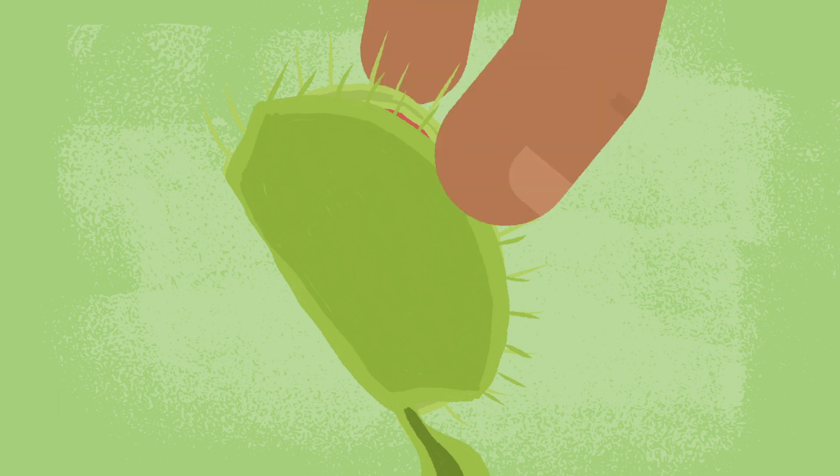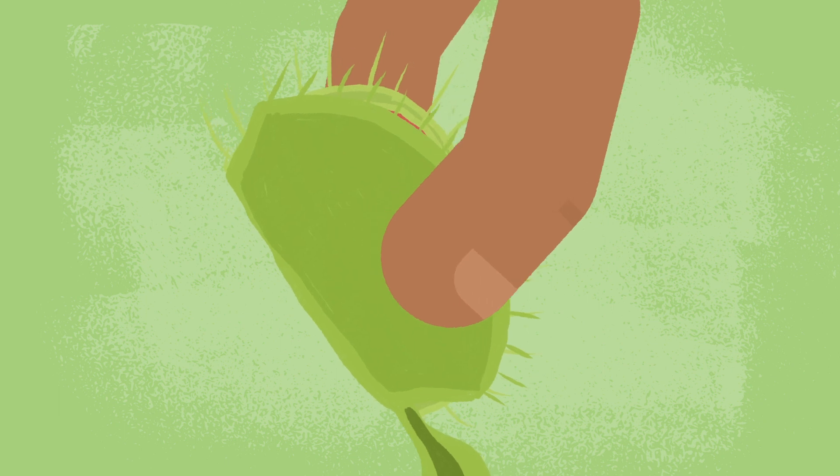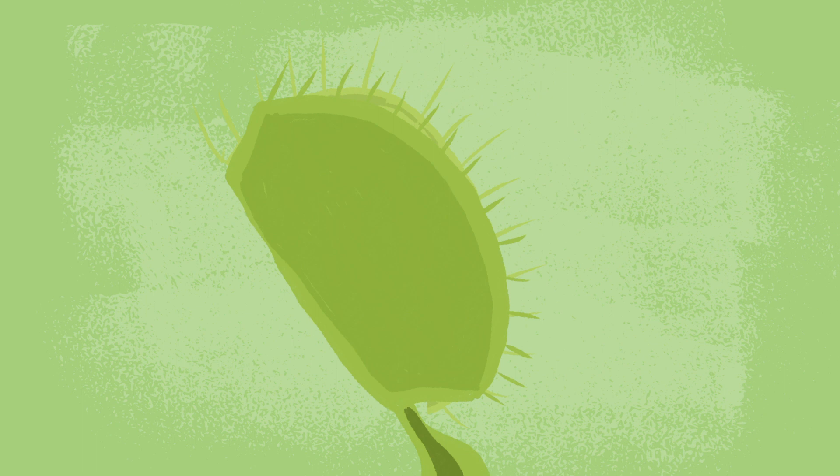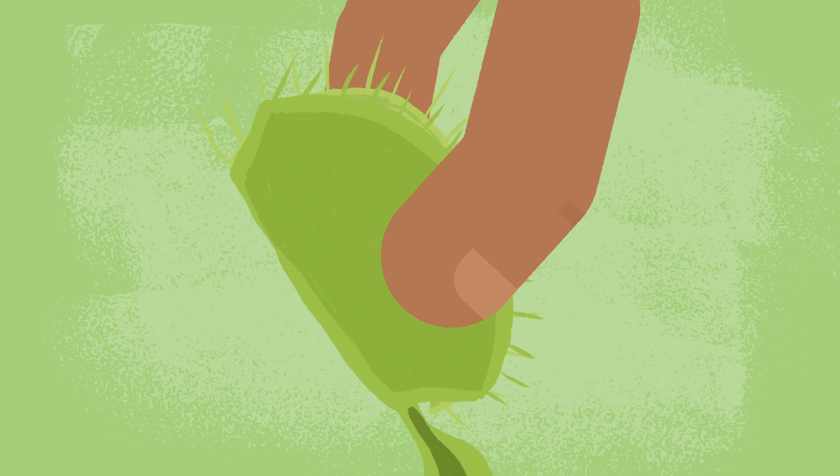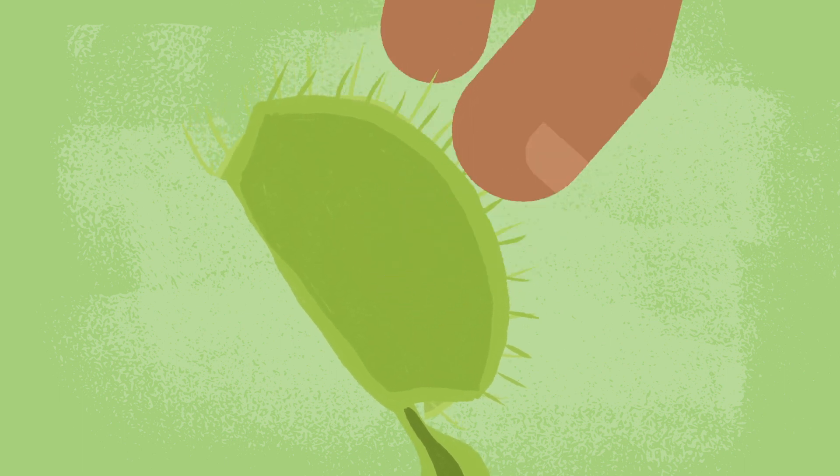Using forceps or your fingertips, press softly on each side to help the trap close tighter. Too hard, the trap will be damaged. The next step is to wait 30 minutes to one hour. Press each side again. What you see here is a completely sealed trap.